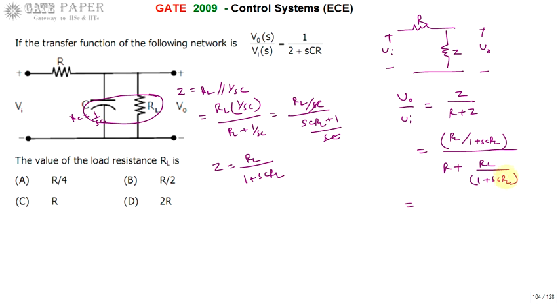The (1 + sCRL) terms cancel, and after simplification the denominator becomes R·(1 + sCRL) + RL.